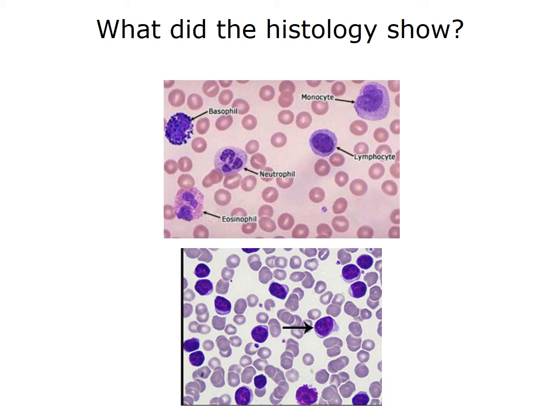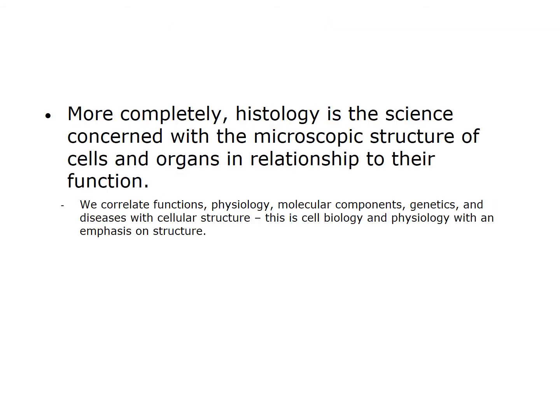Misclassifying an abnormal sample as normal will lead to disease progression in a patient, while misclassifying a normal sample as abnormal could result in unnecessary treatment. For us, histology is really concerned with the microscopic structure of cells and organs in relationship to their function, physiology, molecular components, genetics, and diseases. Histology is cell biology and physiology with an emphasis on the structures involved.